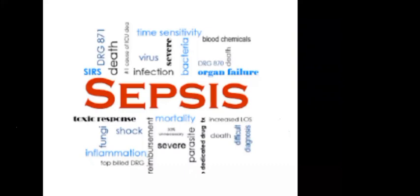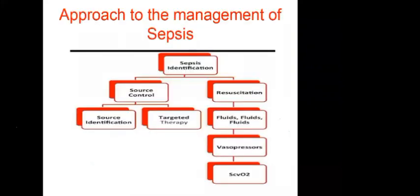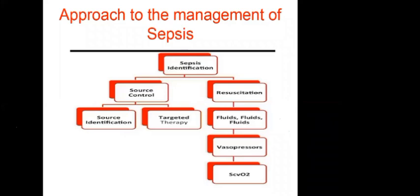Sepsis is a major concern in ICU. The approach involves source identification and source control, targeted therapy, and ongoing resuscitation with vasopressors. Monitoring ScVO2 guides adequacy of resuscitation.